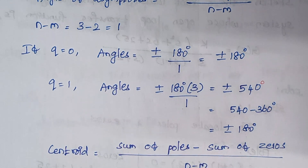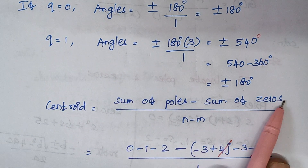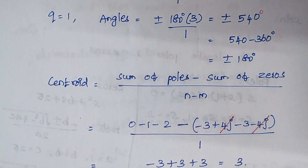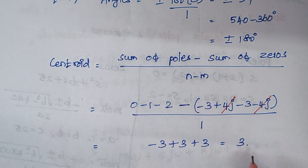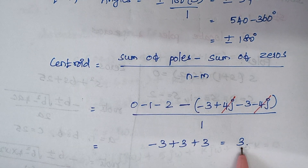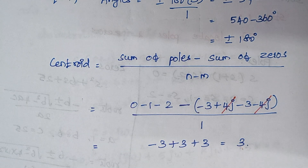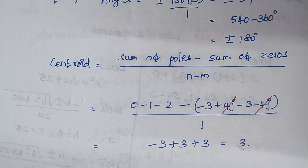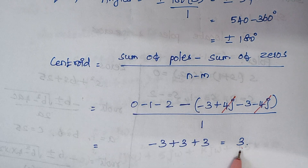The centroid is given by the sum of poles minus the sum of zeros, divided by n minus m. Substituting the values, the centroid is found to be 3. In previously solved problems we always consider only the negative real axis, but here the centroid lies on the positive side, so this problem is a bit different.